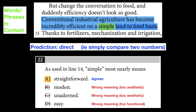Question 22 is a words and phrases in context question, and we're talking about the word 'simple' here. The passage says conventional industrial agriculture has become incredibly efficient on a simple land-to-food basis. In context, 'simple' is being used as directly comparing two numbers — a straightforward, direct comparison.